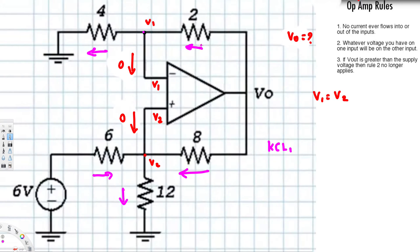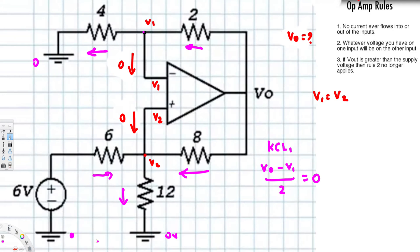For KCL at node 1: the current entering is V-naught minus V1 over 2. Entering must equal exiting. Exiting current from the input is zero, and the other exiting current is V1 minus zero over 4, which is just V1 over 4. That's the KCL equation for the first node.